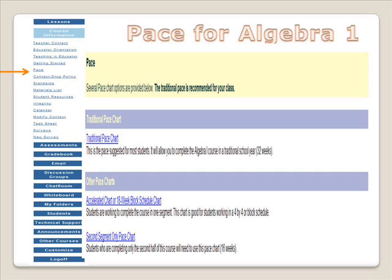You may also choose to work at an accelerated pace to complete both Segments of Algebra 1 in 18 weeks. If you are interested in receiving an accelerated pace chart, please communicate that with your teacher during the welcome call. It can also be located in the course under the Course Information button and then Pace.